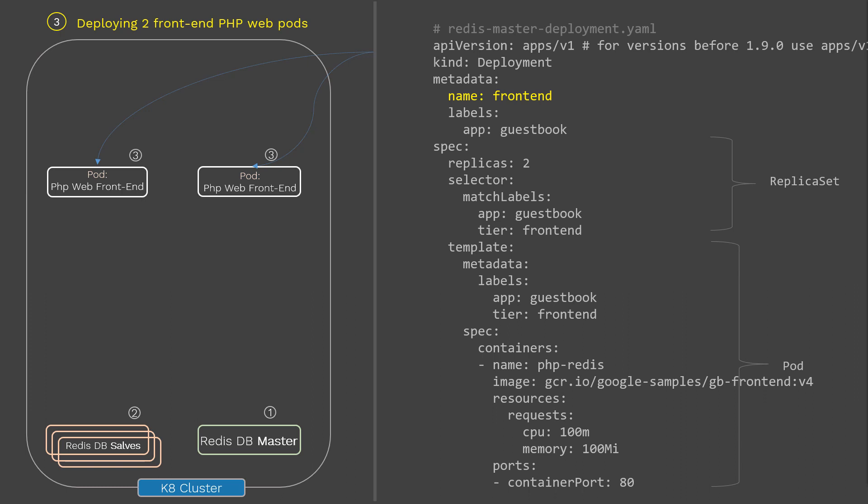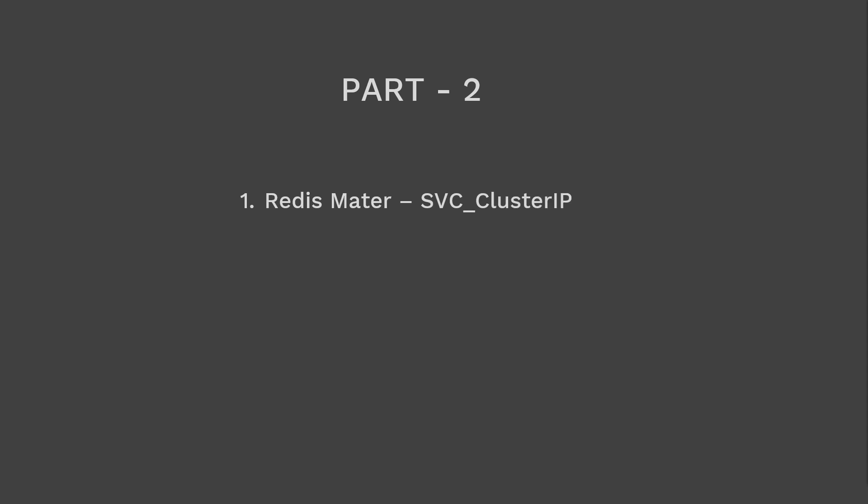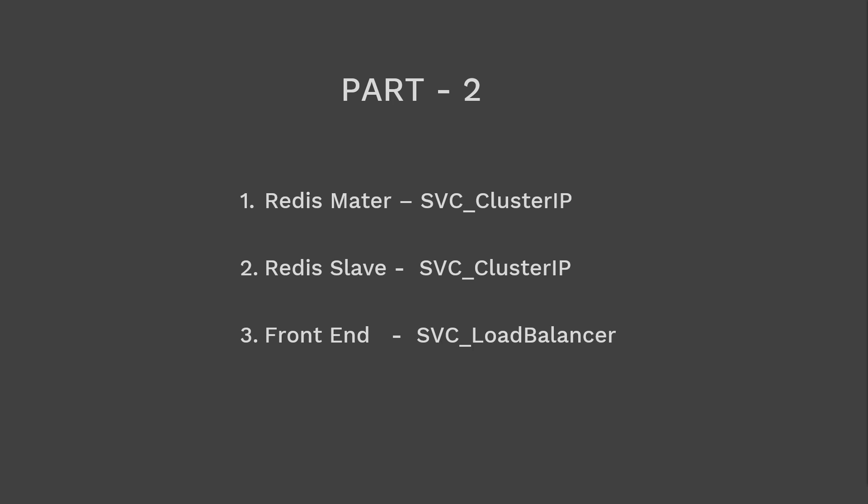Now it's time to create the services to connect these components inside your cluster and expose them to the outside world. We need to create three services: Redis DB master, Redis DB slave, and front-end app. The Redis DB master and Redis slave services will connect the front-end pods to the back-end database pods using ClusterIP service, because they connect and operate inside the Kubernetes cluster.